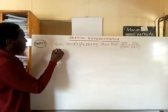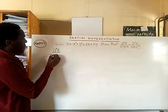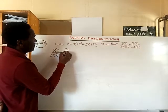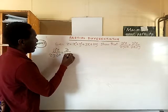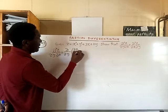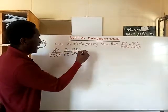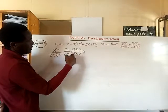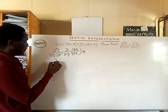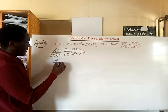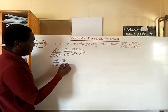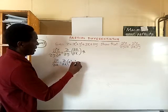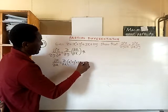So we get the second partial derivative of z — first with respect to x, then with respect to y — by taking the partial derivative with respect to y after getting the first partial derivative with respect to x. First of all, we get the first partial derivative with respect to x: the partial derivative of z with respect to x, applied to z = x² + y² + 3x + 2y.